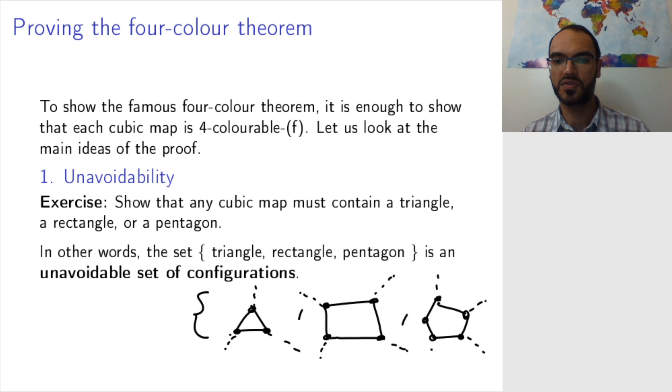So if you look at the actual world map you will see that there is either one country that has three neighbors or one country that has four neighbors or one country that has five neighbors. It's unimaginable that a world exists where no country has any of these numbers of neighbors. So that is one unavoidable set of configurations.